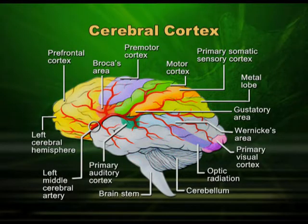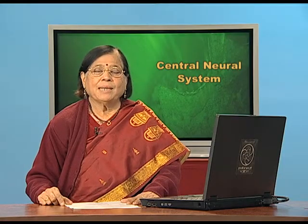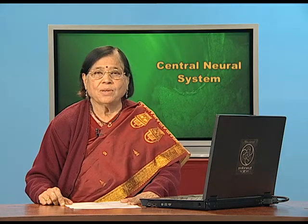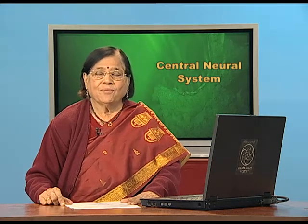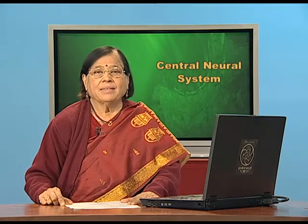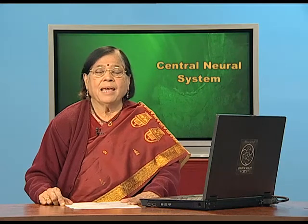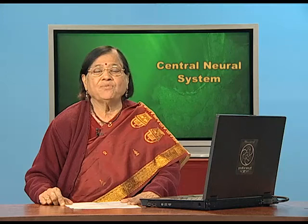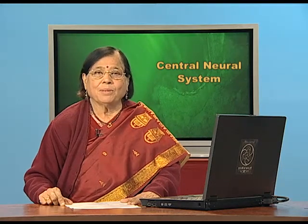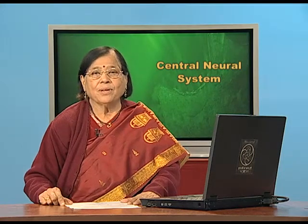The cerebral cortex, which is highly folded with a large surface area, has sensory areas, motor areas, and association areas. Sensory areas look after sensory functions, and motor areas look after motor functions. Association areas are large in number, bigger in size, and perform complex inter-sensory functions, making them the most important areas of the cerebral cortex.